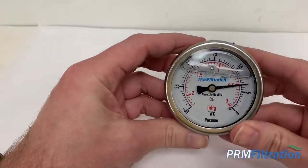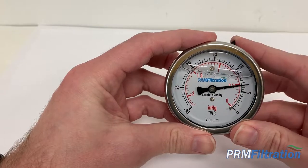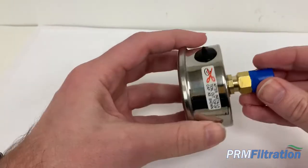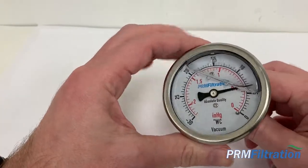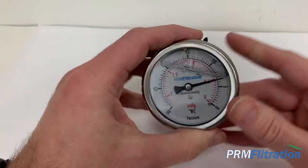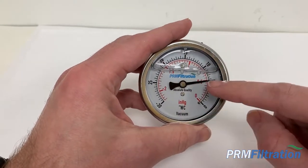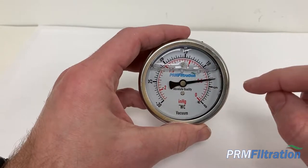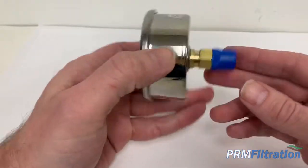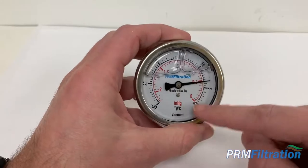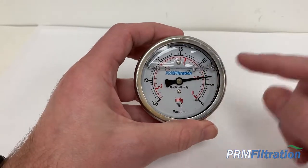Sometimes when these gauges are sent to you, they will fly, and the pressure on an airplane can cause them to read something, even though they're not hooked up to anything, so it should not be reading anything at the moment.